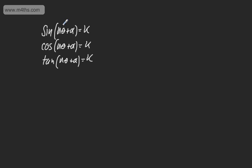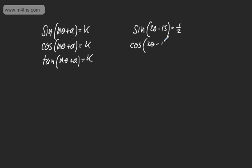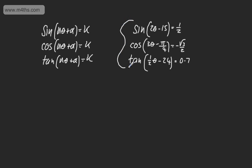That would be an example if we just had sine of n theta. When we include plus alpha, this gives us what we call a compound angle. An example might be sine of 2 theta minus 15 degrees equals one-half, cos of 3 theta minus pi by 4 equals minus root 3 over 2, or tan of one-half theta minus 24 degrees equals 0.7. These are all examples of compound angles involving a multiple angle.